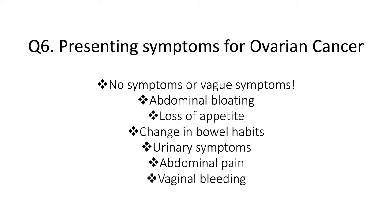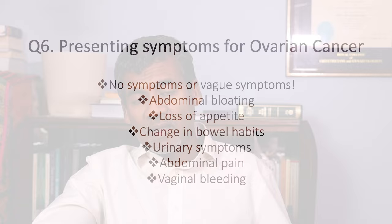Question 6: What are the presenting symptoms for ovarian cancer? This cancer is often referred to as the silent killer because many women don't have any symptoms, or have only vague symptoms, until the disease is advanced. About 50% of women with ovarian cancer will present to a specialty other than gynaecology — for example, to a physician with symptoms consistent with irritable bowel syndrome. When symptoms do manifest, they can include abdominal bloating, loss of appetite, change in bowel habit, urinary symptoms, abdominal pain, and less commonly, vaginal bleeding.